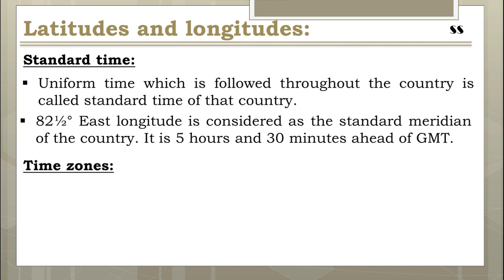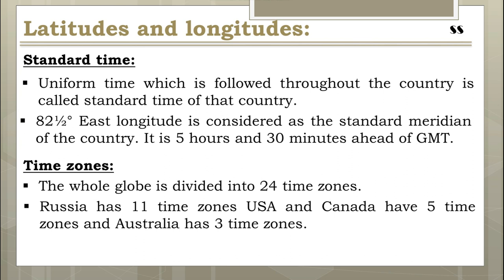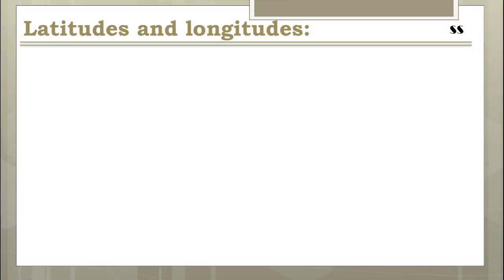In certain countries where the longitudinal extent is so large that there is a difference of 3 to 4 hours between one part and the other, the land surface is divided into time zones. The whole globe is divided into 24 time zones, so the time in each zone differs from the other by only one hour. Large countries like Russia, USA, Canada, and Australia have vast longitudinal extents, so they have different time zones. Russia has 11 time zones, USA and Canada have 5 time zones each, and Australia has 3 time zones.